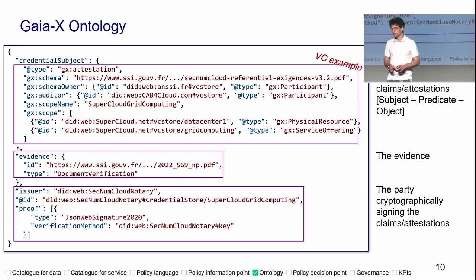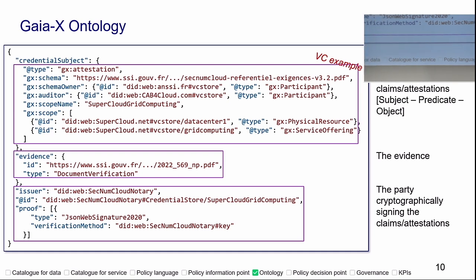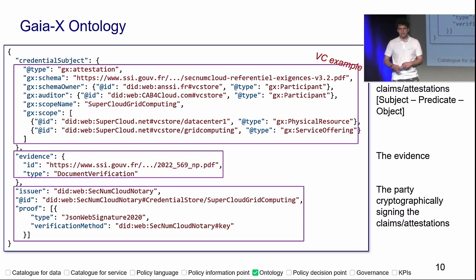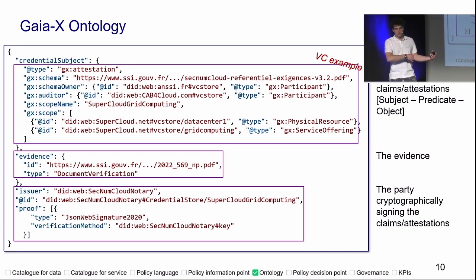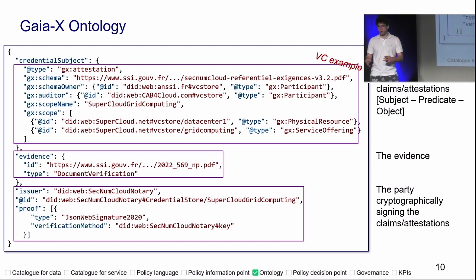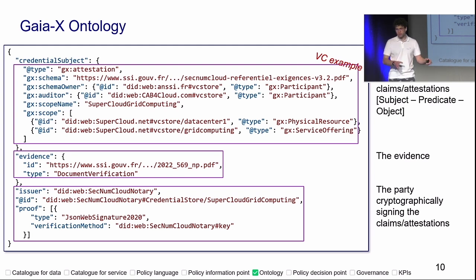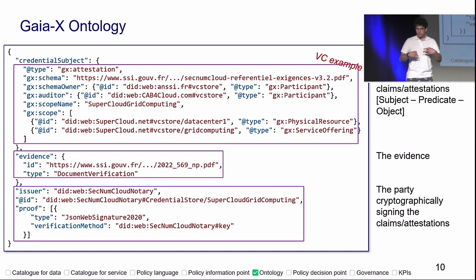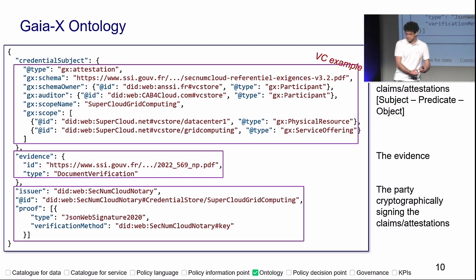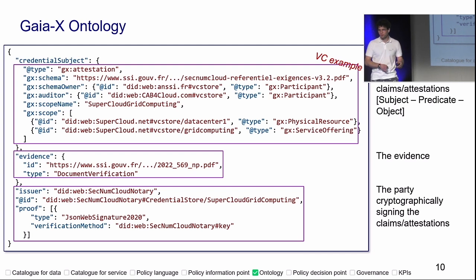This is a very important part of the decentralization of the knowledge graph. Bob is a farmer — this claim itself can be signed by Bob. But Alice or Bob's friends could also sign a claim saying that Bob is a farmer. Here we have the notion of a notary that validates a prior SecNumCloud certification within a well-defined scope of a data center and grid computing. The IDs here point to other credentials — that's how we build this knowledge graph. You fetch, resolve the identifier, and get another piece of information. If interested, we have a compliance workshop at 2 o'clock.